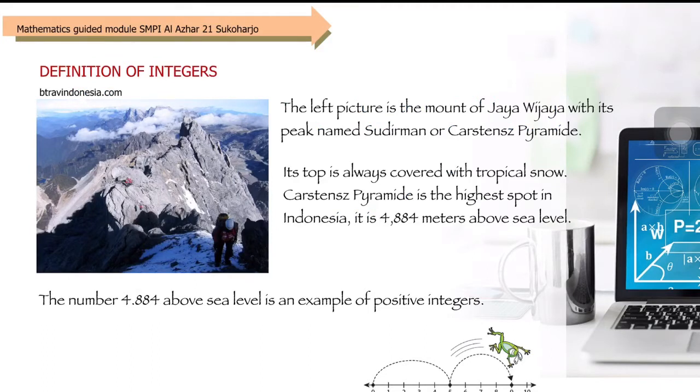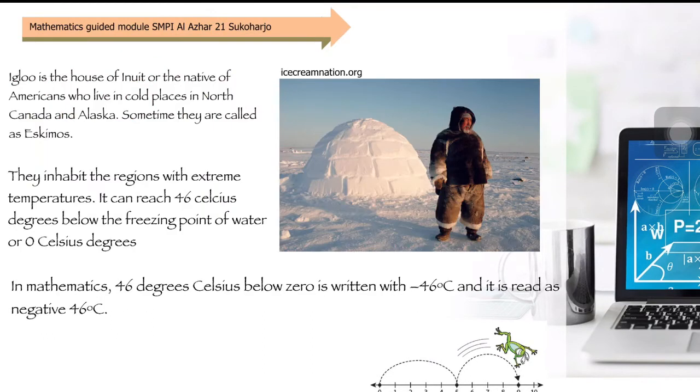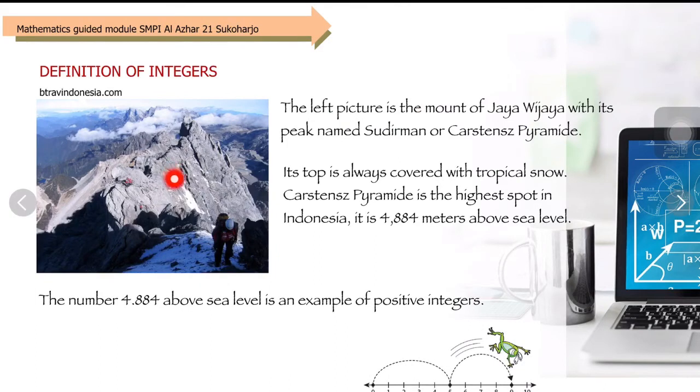I have a picture here for you. This is Mount Jaya Wijaya with its peak named Sudirman or Carstensz Pyramid. The top is always covered with tropical snow.